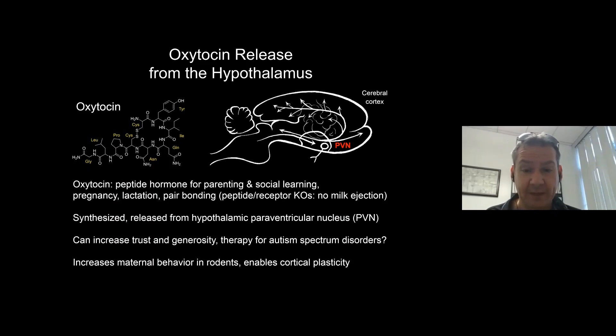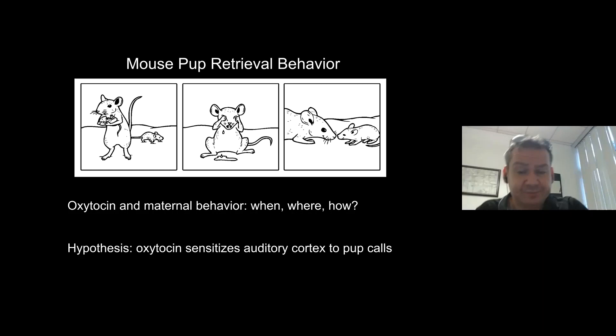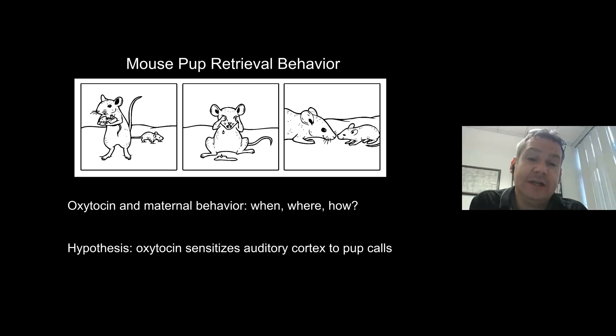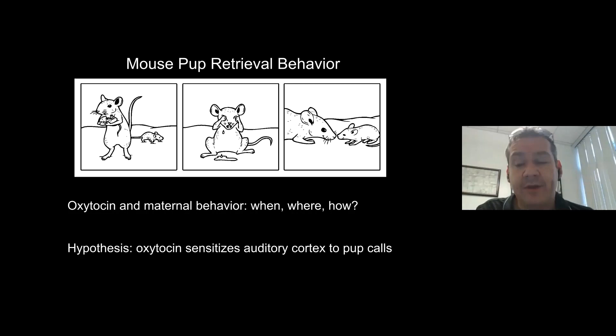Here's a cartoon of pup retrieval. Mice are a prey species and have to move their nests around in the wild to escape predation. Pups are born blind and deaf. If a pup is isolated from the caretaker, it shifts its ultrasonic vocalizations to the high ultrasound spectrum, emitted at a characteristic bout rate of around five hertz. The mother uses the sound of this baby crying to go find the pup and take it back to the nest.